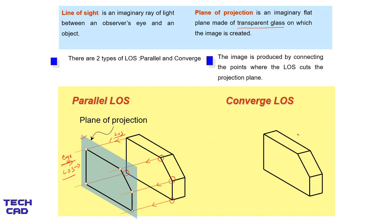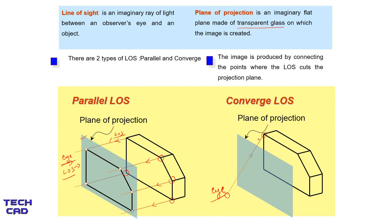Now what is converging line of projection? We have the same 3D object, and for projection we need a plane. The observer's eye is here and makes a projection on this plane. You can see that the lines of sight are not parallel — they are converging to one point, and that one point is the eye of the observer. From every vertex there is a line of sight but it is converging to one point that is the eye of the observer. Now joining the points where lines cut the plane of projection gives us the converged projection.